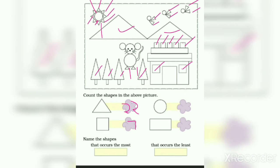Let us count circles. 1, 2, 3, 4, 5, 6, 7, 8. We have 8 circles.